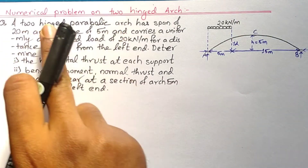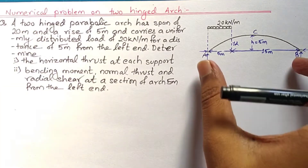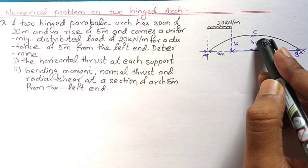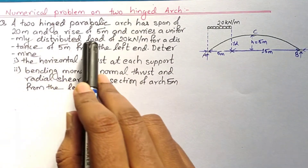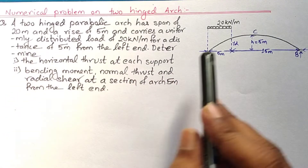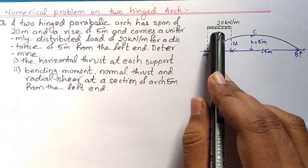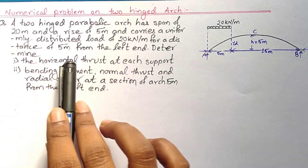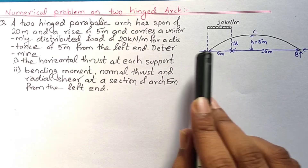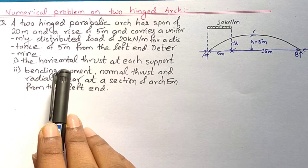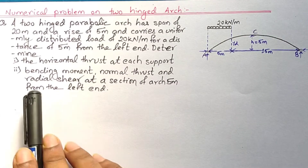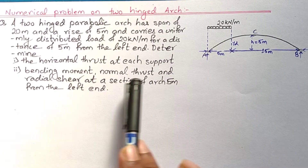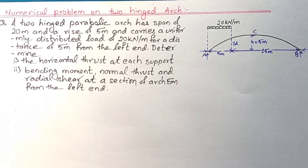The question: a two-hinged parabolic arch has a span of 20 meters, a rise of 5 meters at the crown, and carries a uniformly distributed load of 20 kN/m for a distance of 5 meters from the left support A. We are asked to determine the horizontal thrust at each support, and the bending moment, normal thrust, and radial shear at a section 5 meters from the left support.